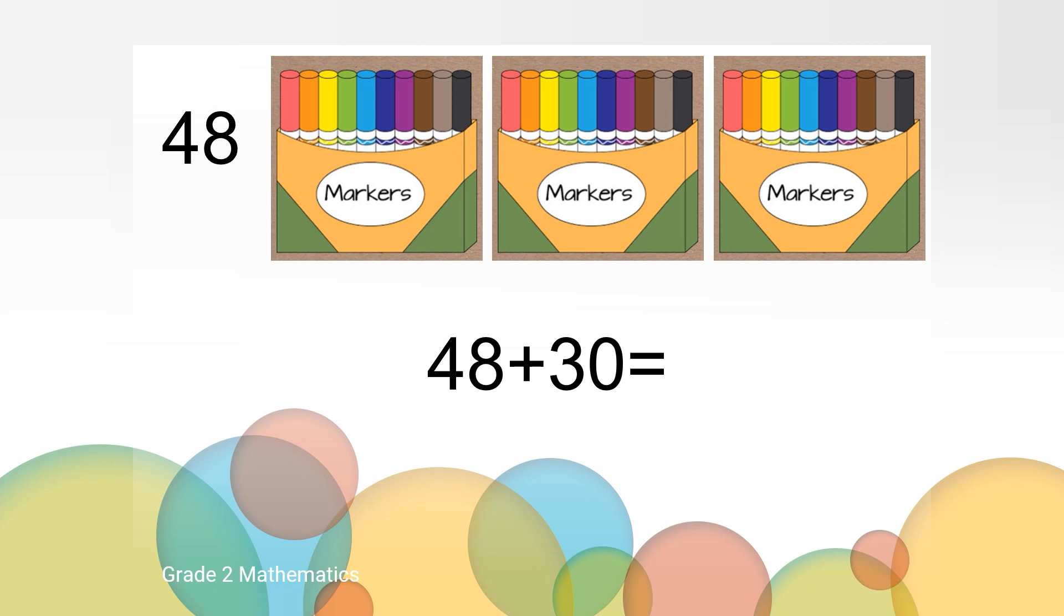How did you think about how to solve for the number of markers that you have now? Maybe you thought about the bundles and sticks we counted with before. If I have 48 and add three more groups of 10, I could count: 48, 58, 68, 78. Or maybe you thought about four tens and three tens is seven tens or 70, and there are eight markers left, so 70 plus eight more equals 78.